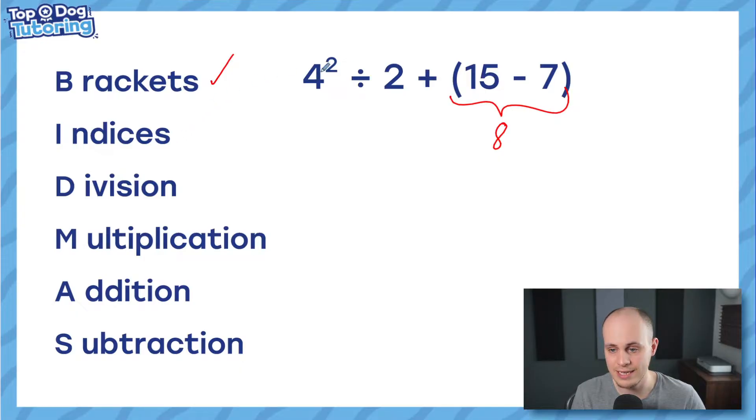Next up is indices. This is here. 4 squared, which we know means 4 times 4. I'm going to replace that with 16. Now, I'm left with 16 divided by 2 plus 8. I've got two things left. I've got division and addition.